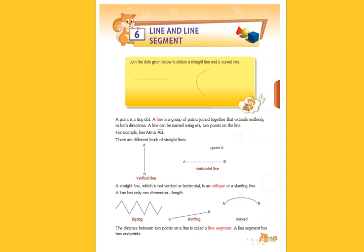A line can be named using any two points on the line. Aur us line ko hama name de sakte hai kaisa de sakte? Koi bhi do point pe hama usko name de sakte hai. For example, line AB or line AB. This is the symbol of line, this bar. So there are different kinds of straight lines.